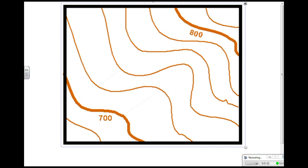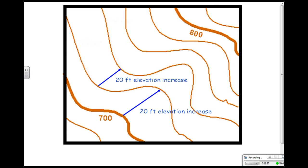With topographic maps we also have something called contour intervals. A contour interval is the difference in elevation from one contour line to the next. In this example, they give you two elevations: 700 feet and 800 feet, but there are lines in between those two elevations without numbers. To find the contour interval, I take the two elevations — 800 and 700 — and subtract them, which gives me 100. I then count how many contour lines are in between: one, two, three, four, five. So I take 100 divided by 5, which gives me 20 feet — the contour interval for this map.